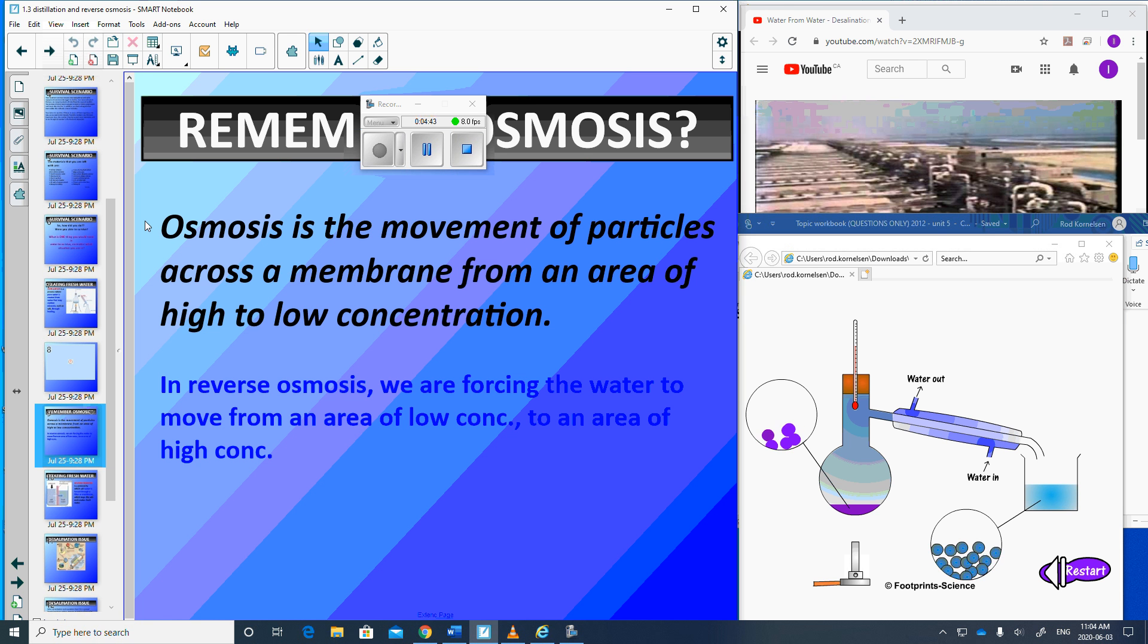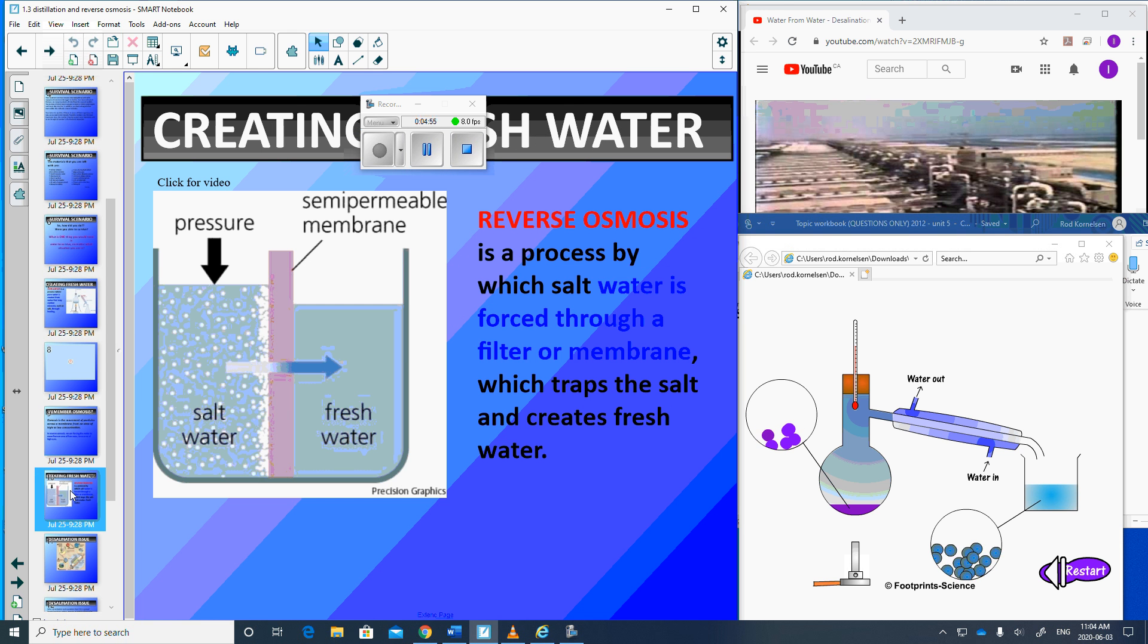Okay, slight shift. Osmosis is the movement of particles across a membrane from an area of high concentration to low concentration. In reverse osmosis, we're forcing the water to move from an area of low concentration to an area of high concentration. We make it move backwards.